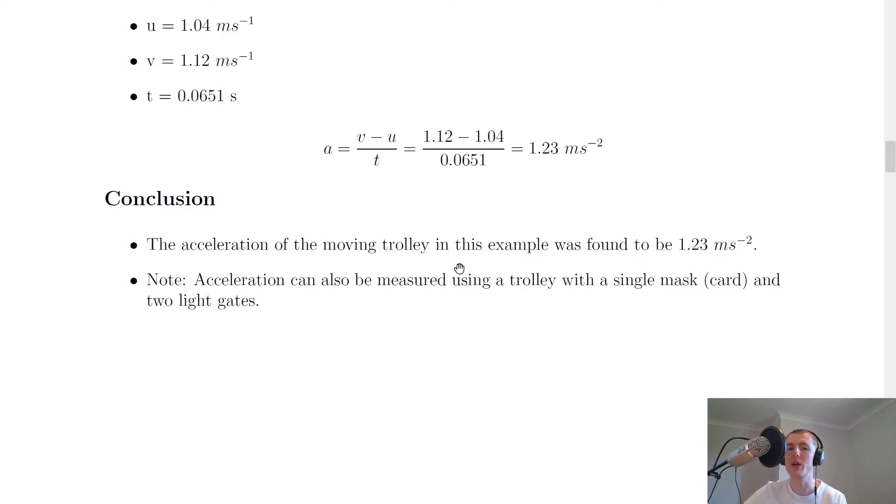Now, remember that I've only shown you one way of doing this, but you might be doing a different way in class. Acceleration can also be measured using a trolley with a single mask and two light gates. So what we used in this example was a double mask and a single light gate, but it can also be done using a single mask and two light gates instead.